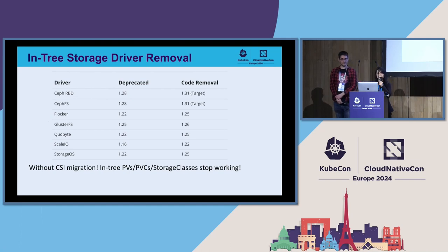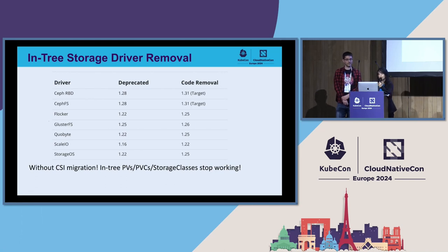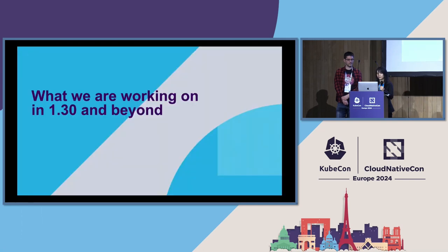This table shows in-tree storage driver removal. These drivers do not go through CSI migration, meaning after the in-tree plugin is removed, you can no longer use the in-tree PV/PVC storage classes. GlusterFS in-tree plugin was removed in the 1.26 release. Ceph RBD and CephFS in-tree plugins were also deprecated and are targeted for removal.